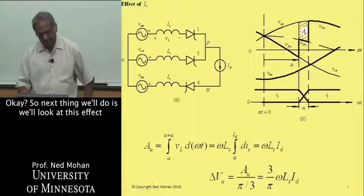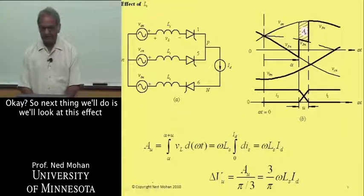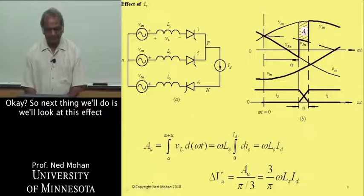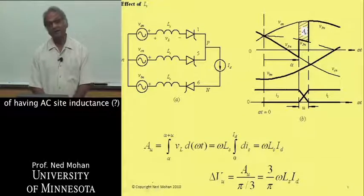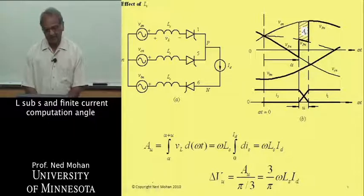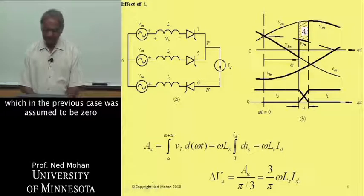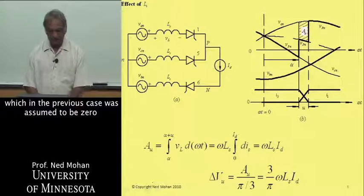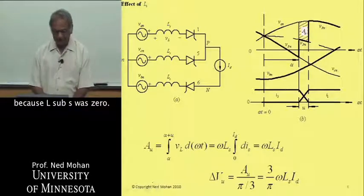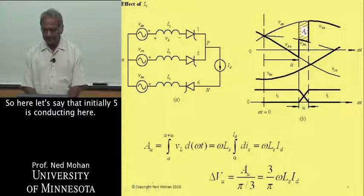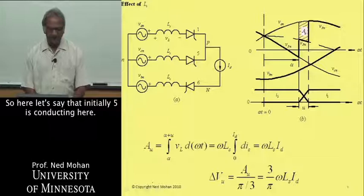Next we'll look at this effect of having AC side inductance, L sub s, and finite current commutation angle, which in the previous case was assumed to be 0 because L sub s was 0.